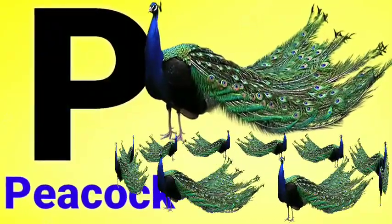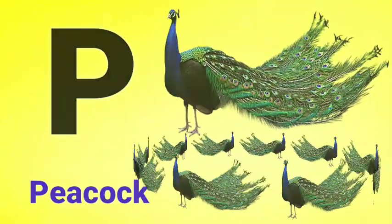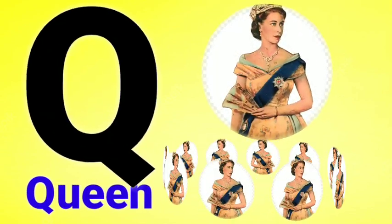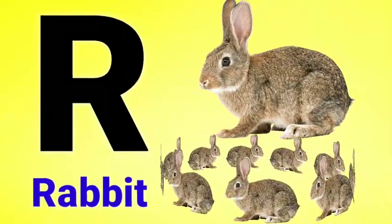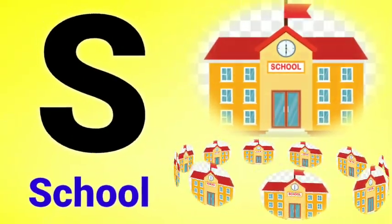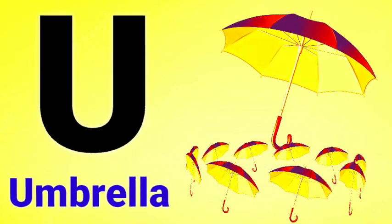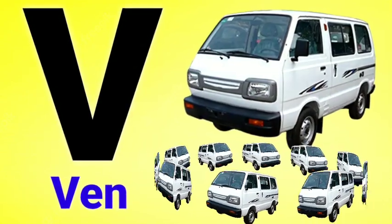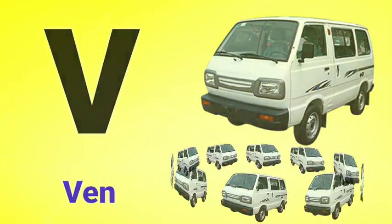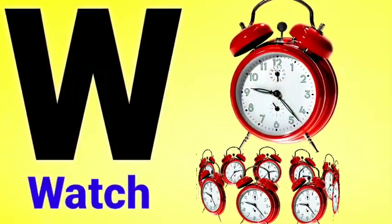P for Peacock, Q for Queen, R for Rabbit, S for School, T for Tiger, T for Tiger. U for Umbrella, U for Umbrella. V for Vane, V for Vane. W for Watch.